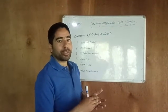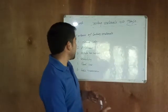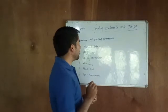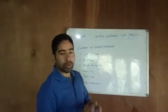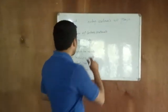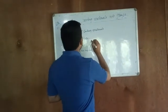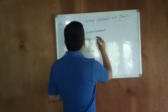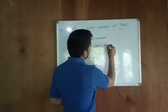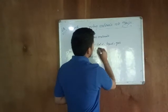Number one criteria is physical state. We have to check the physical state of a material — whether it is a solid, whether it is a liquid, or whether it is a gas. On the basis of physical state, we can sort the material into a group.